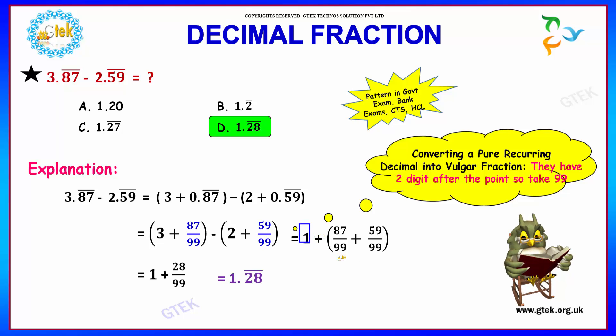Which is equal to 1 plus 87 by 99 minus 59 by 99, which equals 1 plus 28 by 99. Our final answer is 1.28̅ bar since 28 is by 99. Hence 2 reoccurring digits, hence 2.8 bar. That is, option D will be your answer.